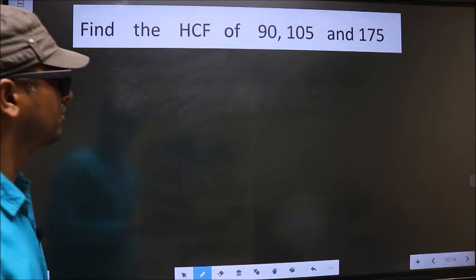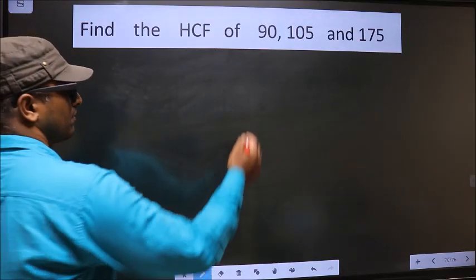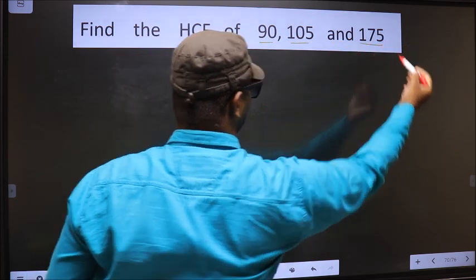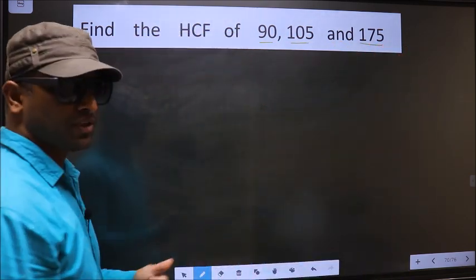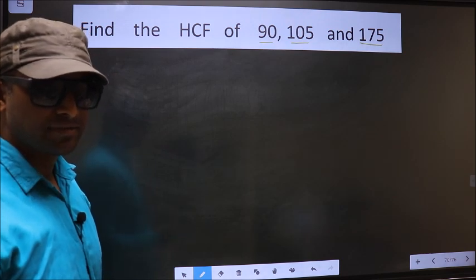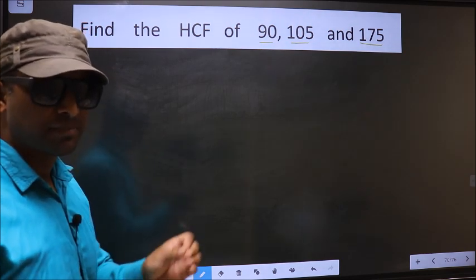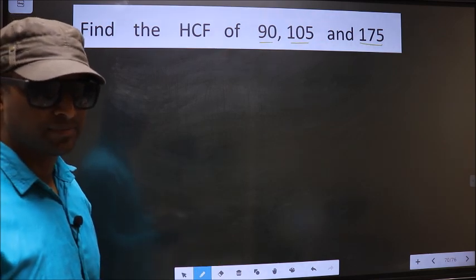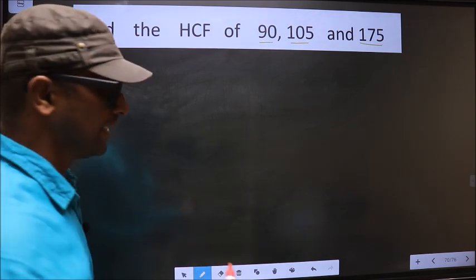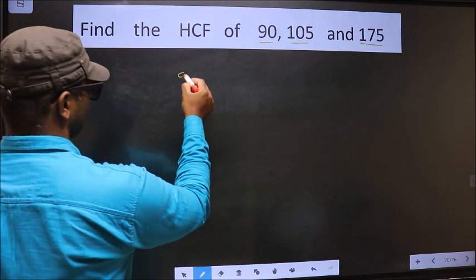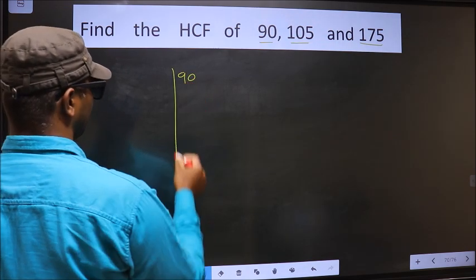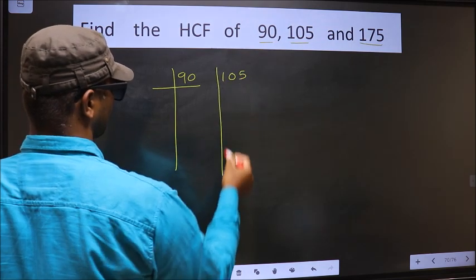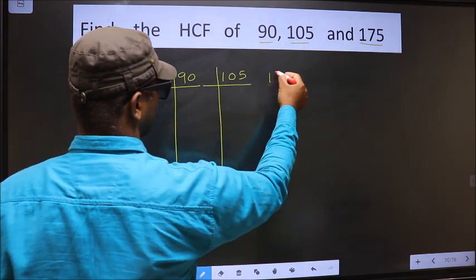Find the HCF of 90, 105, and 175. To find the HCF, first we should do the prime factorization of each number separately — that is 90, 105, and 175.